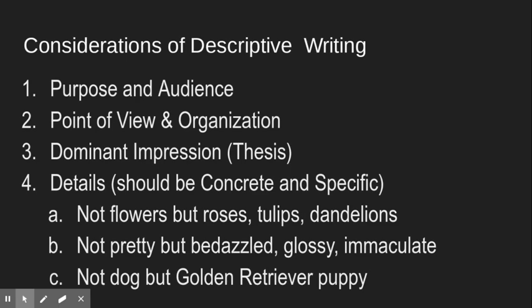When you write descriptively, there are four things to consider. First, consider your purpose and your audience. What is your purpose? Do you want to convey an idea objectively? Is your audience students, or a scientific group? Or is your purpose to show an experience and reveal emotion? Thinking about who your audience is, you have to think about why you're writing.